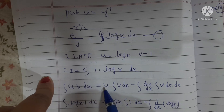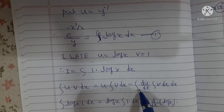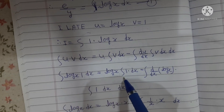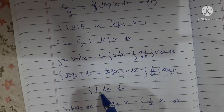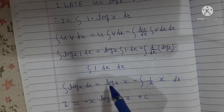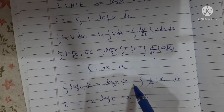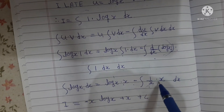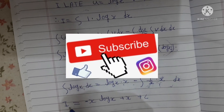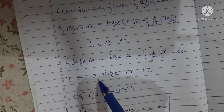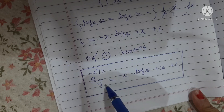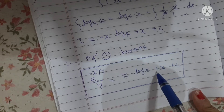Applying integration by parts: ∫u·v dx = u·∫v dx − ∫(du/dx · ∫v dx) dx. So ∫log(x)·1 dx = log(x)·x − ∫(1/x)·x dx = x·log(x) − ∫1 dx = x·log(x) − x + C. Therefore ∫log(x) dx = x·log(x) − x + C.